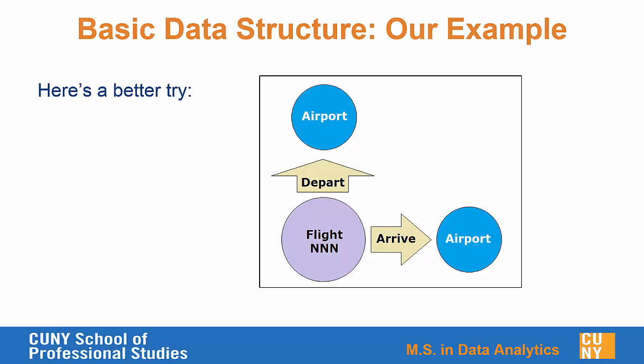For the departure and arrival relationships, there might be different attributes we would assign to those relationships as well. Each of these objects can store properties — that's why we call it a property graph model.